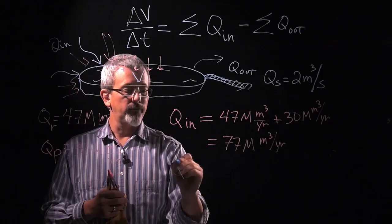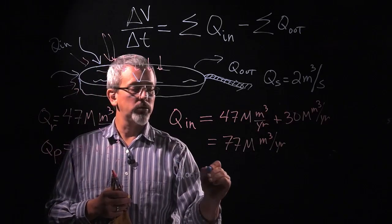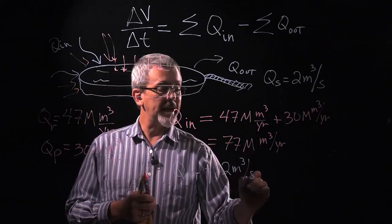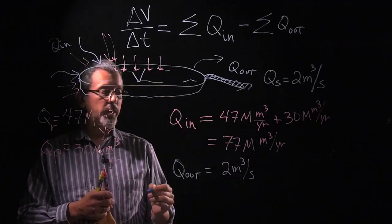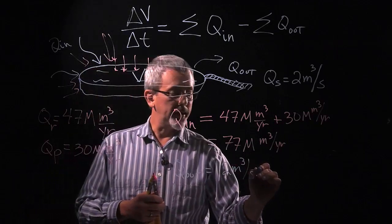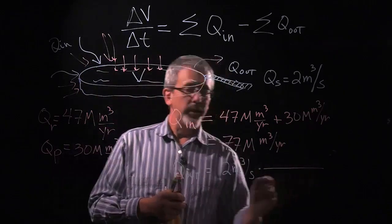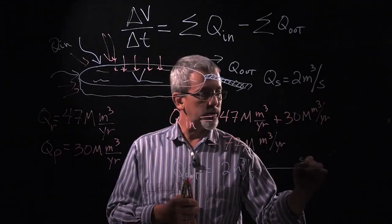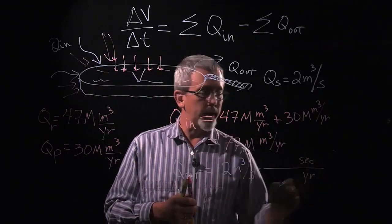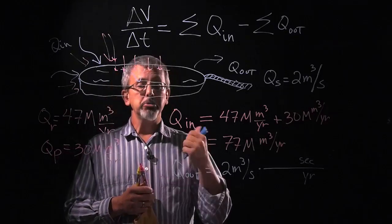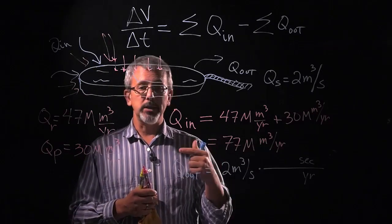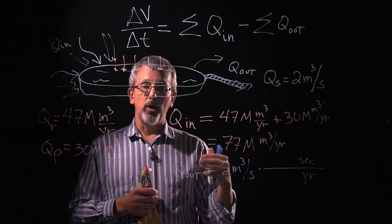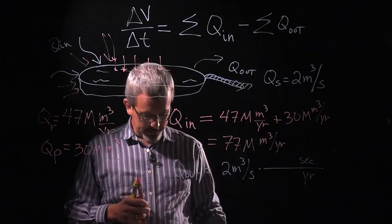So let's take my flow out, which as far as we know is only this stream of 2 meters cubed per second. And let's go ahead and convert that into how many seconds there are in a year. Let's see here. I need seconds on the top here and year on the bottom. And in this case, we would have to multiply 60 seconds in a minute, 60 minutes in an hour, 24 hours in a day, and then finally our 365 days in a year.